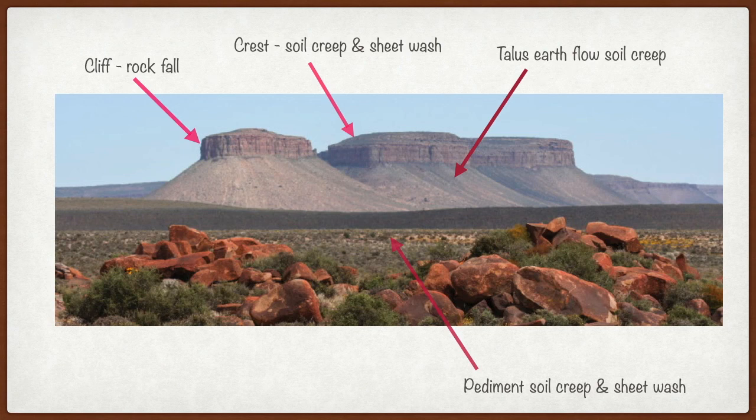And then what happens on the talus slope, materials get rolled down, bounce against each other, but also we get earth flow, and we could also get soil creep along that slope. And then finally along the pediment, all that fine material gets pushed along the pediment slope, either by soil creep or by sheet wash.